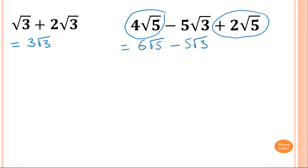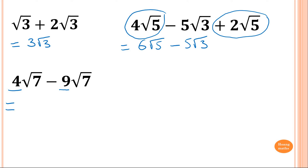This one involves root 7 as the like term. We have 4 root 7 minus 9 root 7 — that's like 4 minus 9, but since it's 9 minus 4 with the negative, the answer is minus 5 square root of 7.